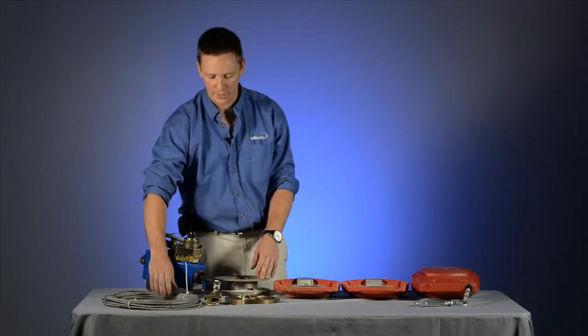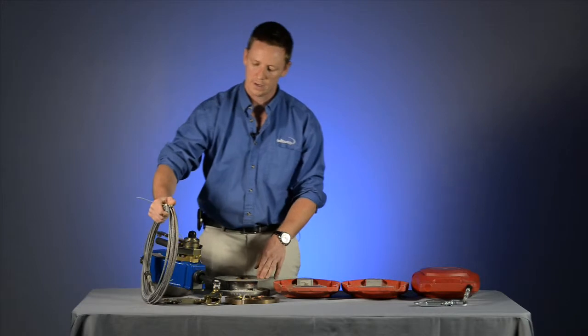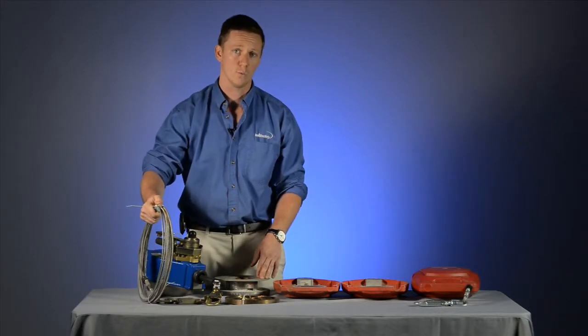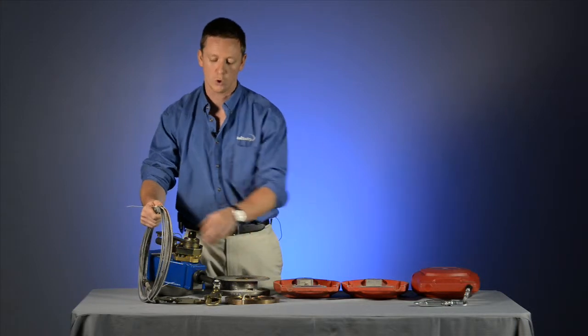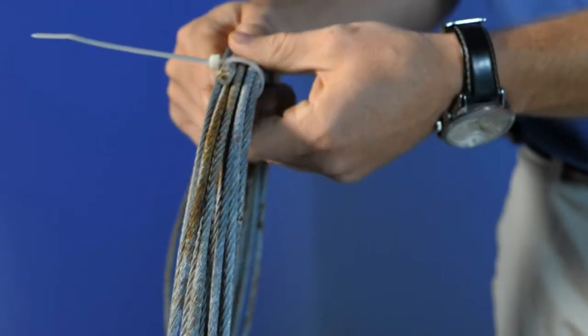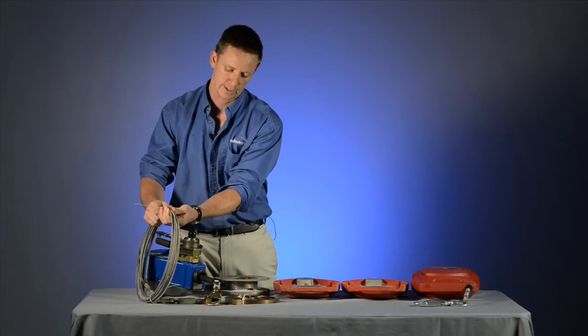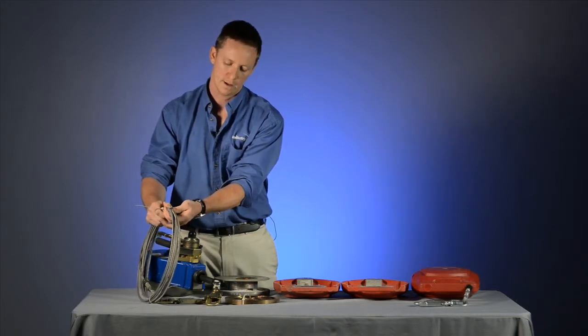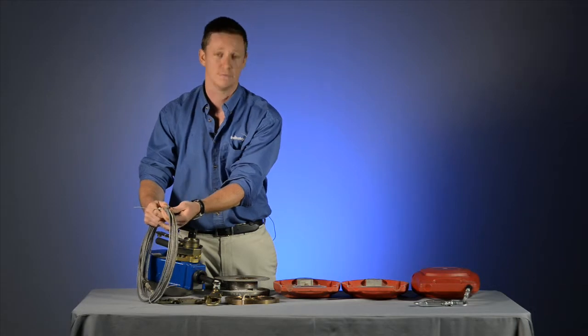The next major component is the cable itself. This is a galvanized cable. You can also get them in stainless steel and rope as well. All units follow the same inspection criteria for cable. This one being galvanized, it can see some moisture, but extensive exposure to moisture can cause severe rusting.